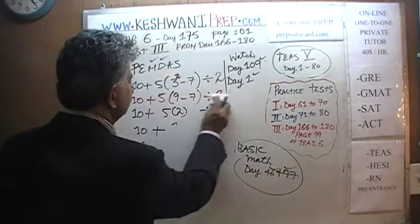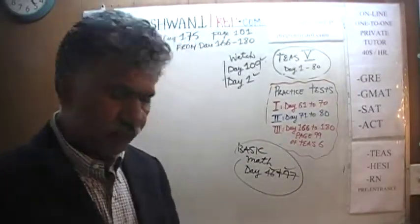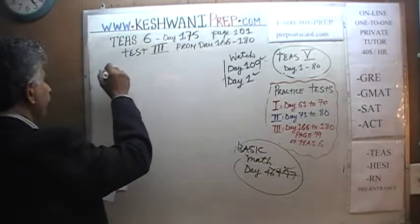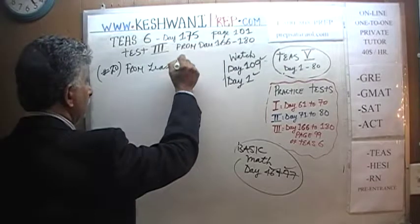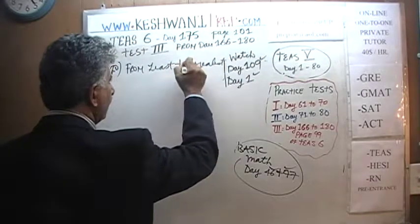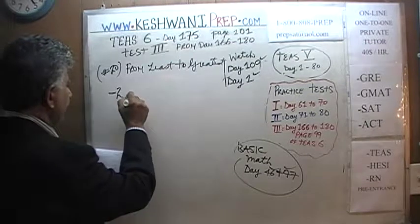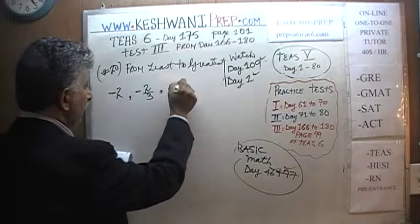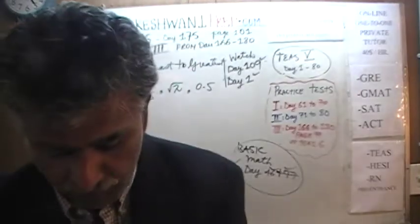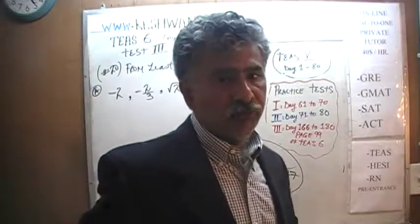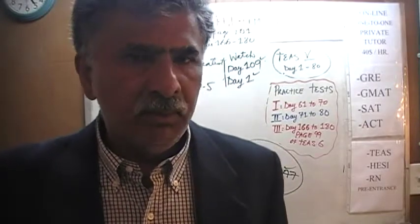Let's do the next one. The more you practice, the better you will get at it and the more confidence you will build, because these are very easy to mess up on. In question number 20, you are being asked to arrange numbers from least to greatest. The numbers that appear across all four answer choices are: negative 2, negative 2/3, √2, and 0.5. Instead of evaluating one answer choice at a time, we are just going to arrange them properly first and then pick the right answer.